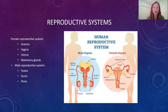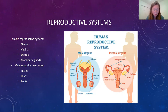The last system is our reproductive system, and this is broken down into the female and male reproductive systems. The female reproductive system consists of ovaries, vagina, uterus, mammary glands, and other accessory structures.